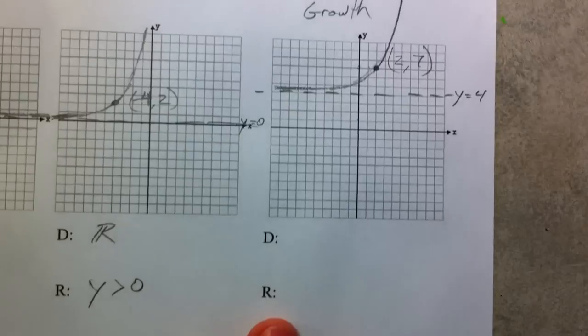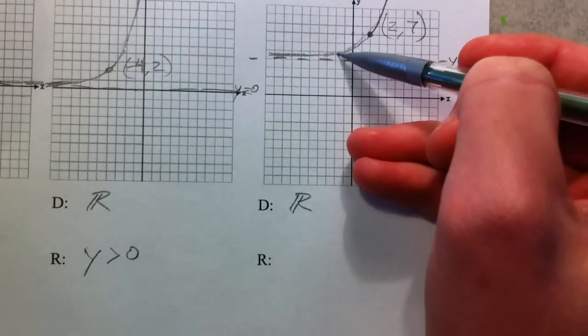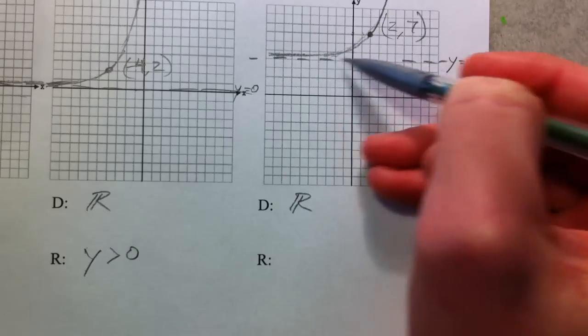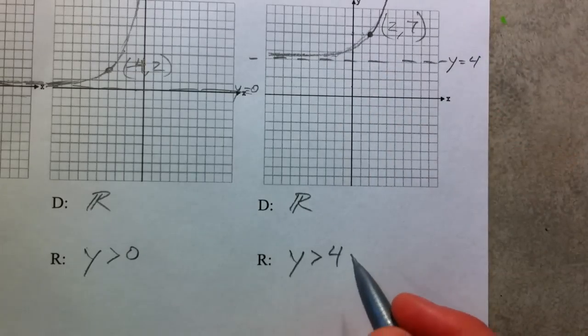Our domain is all real numbers still. But the range now, all the y values don't start until our horizontal asymptote here, and so y has to be greater than 4.